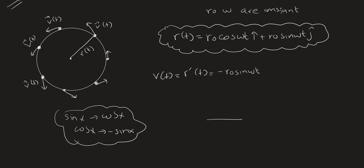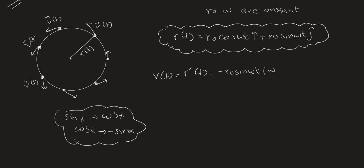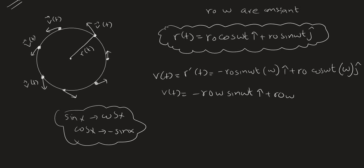Applying this back to our position equation: the derivative of cos(ωt) gives -ω·sin(ωt), and the derivative of sin(ωt) gives ω·cos(ωt). So the velocity vector is: v(t) = -r0·ω·sin(ωt)î + r0·ω·cos(ωt)ĵ.